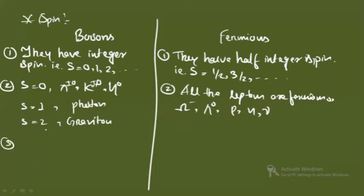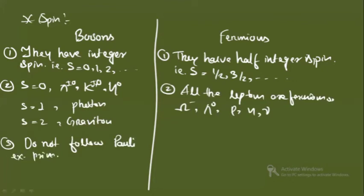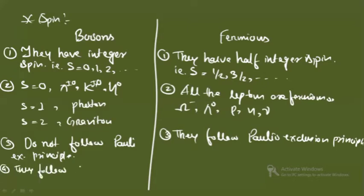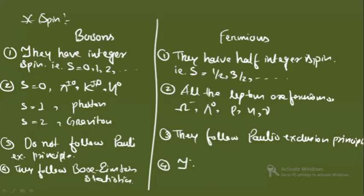The third point is that bosons do not follow the Pauli exclusion principle, but fermions do follow the Pauli exclusion principle. Regarding statistics: bosons follow Bose-Einstein statistics, and fermions follow Fermi-Dirac statistics.